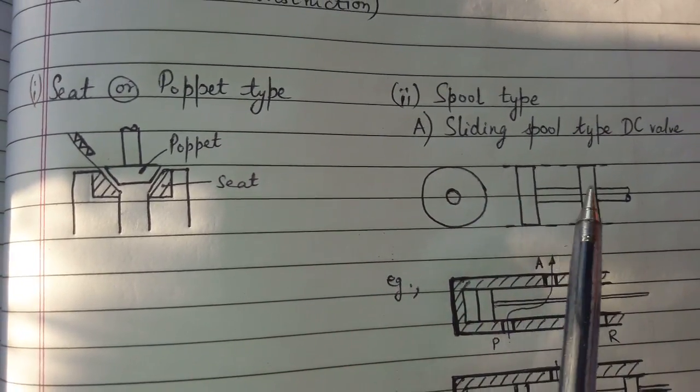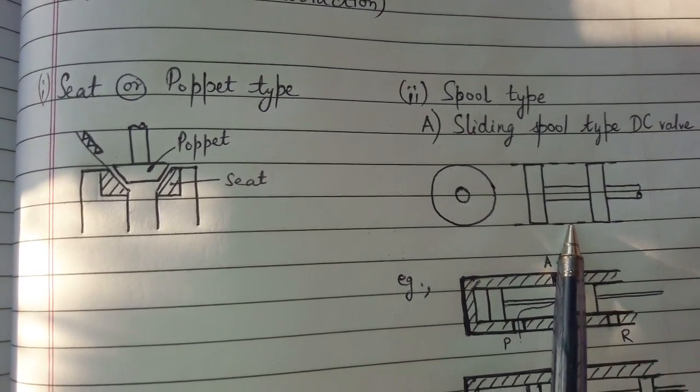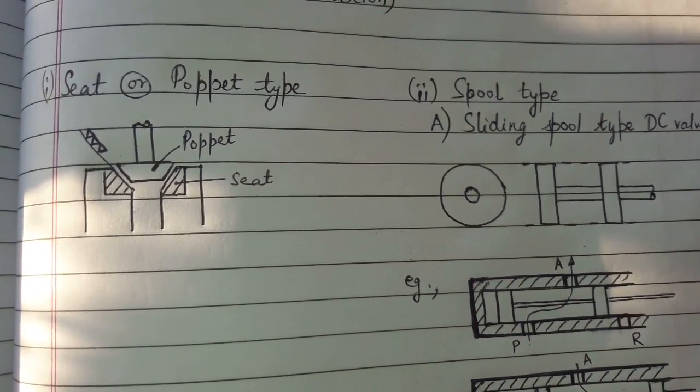In this valve a small piston slides inside the casing thereby opening or closing the ports in the valve body.